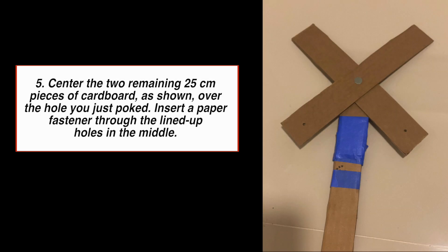Step 5. Center the two remaining 25cm pieces of cardboard as shown over the hole that you've just poked. Insert a paper fastener through the lined up holes in the middle.